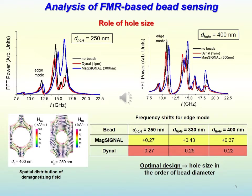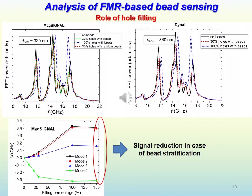The mechanism of detection can be optimized depending on the size of the antidot array holes. In particular, the amplitude of the frequency shifts is larger when the bead has a size similar to the diameter of the holes, because in this case the coupling between the antidot array and the bead is better. Regarding the role of hole filling, it is worth noting that random distribution of beads impacts in a weak way on the ferromagnetic resonance frequency shifts. But in the presence of a bead stratification over the film surface, there is a reduction in the detected signal, due to the magnetostatic interactions between the beads.